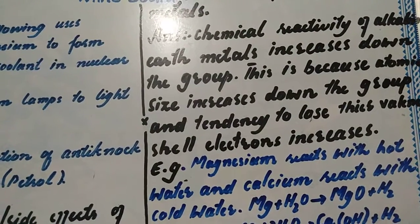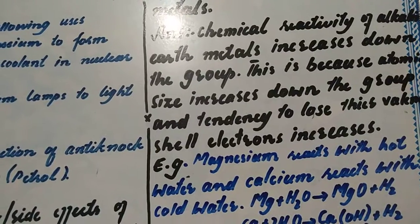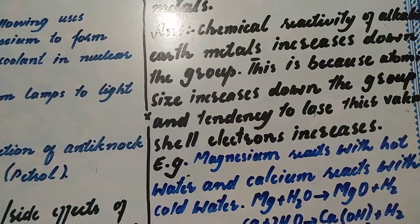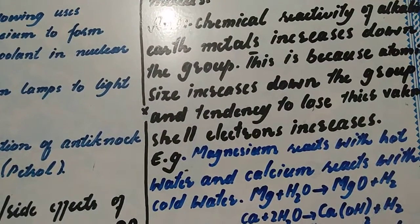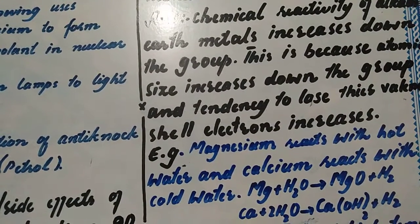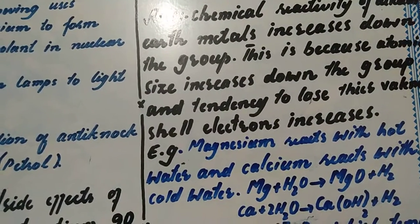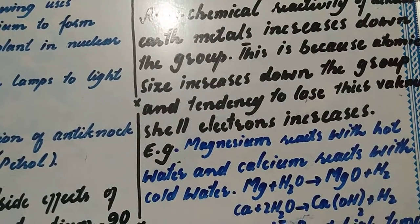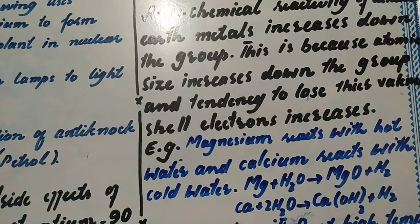When you go from top to bottom in the group, their reactivity increases and they become more reactive. For example, the top element will be less reactive than the bottom element.